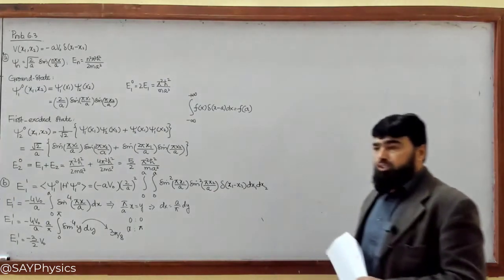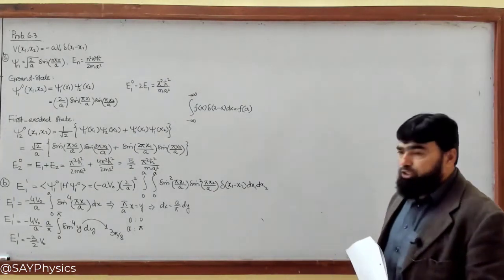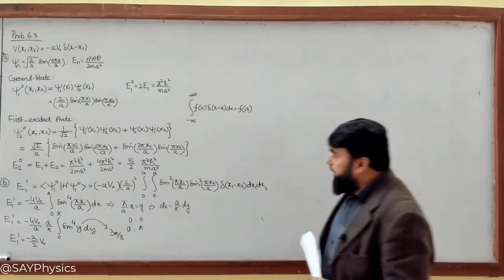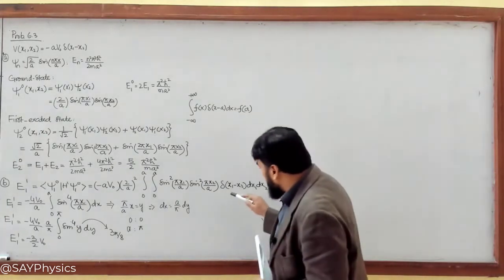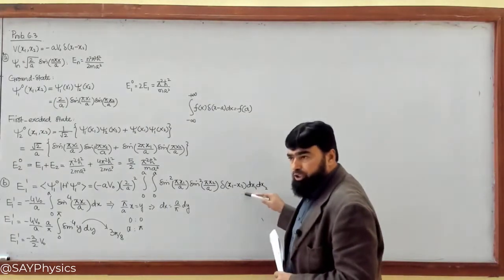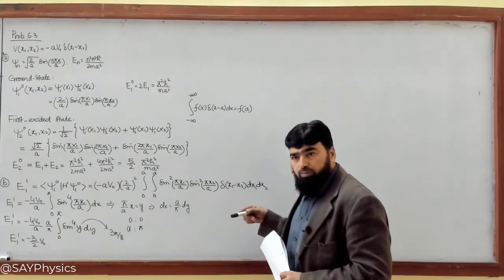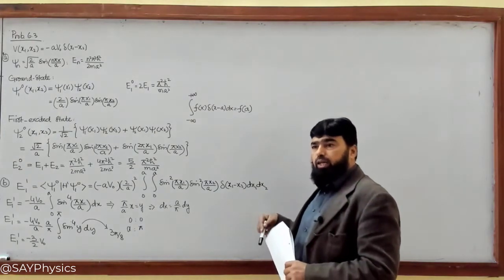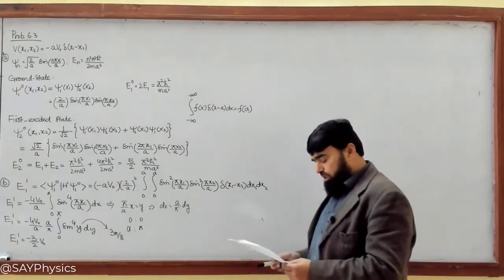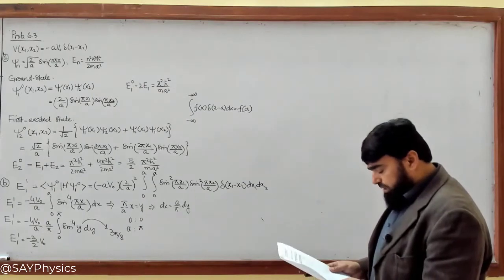This is the first order correction to the energy in the ground state due to the introduction of this perturbation, which is acting like a weakened interaction between the bosons.